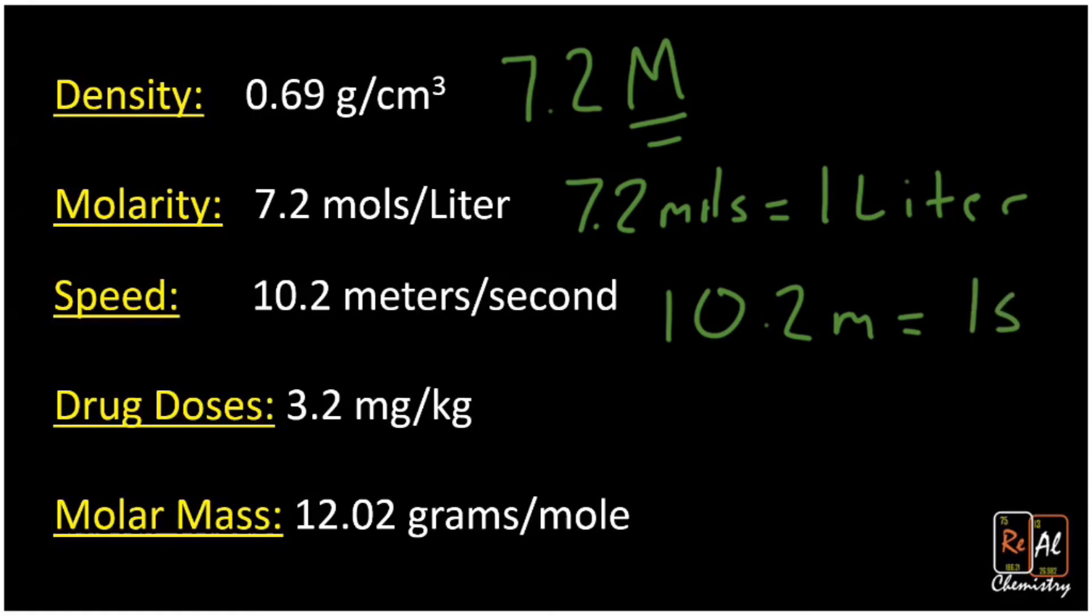Same with drug doses. So very often in chemistry problems, you'll have a dose of a certain amount of medicine, and you can recognize that secretly is a conversion factor. And this one will go between milligrams and kilograms. Very specifically with drug doses, this is milligrams of medicine, and this is kilograms of body weight. So two different types of masses there. It's saying that if you have someone who weighs a hundred kilograms, they need to take 3.2 milligrams per every single one of those kilograms.